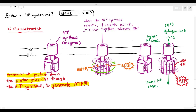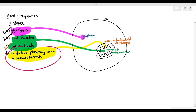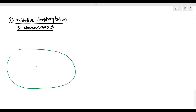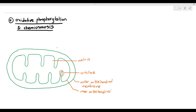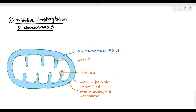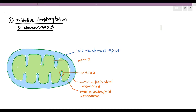Oxidative phosphorylation and chemiosmosis happen in the inner mitochondrial membrane. If I draw out a mitochondrion, you can see the matrix and the cristae — the finger-like structures meant to increase the surface area of the inner mitochondrial membrane. The blue area I'm highlighting is the intermembrane space, which is the area between the outer membrane and inner membrane. This is important.